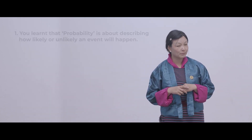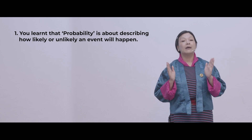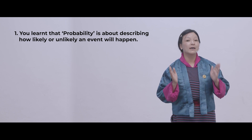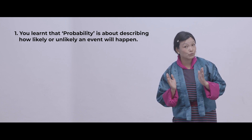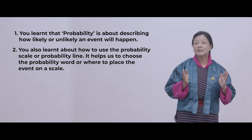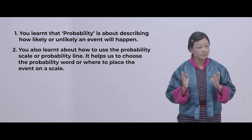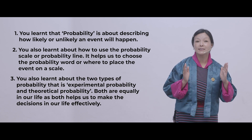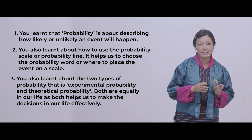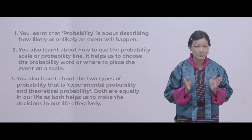Let's recapitulate what you have learned today. In the first part, you learned the concept of probability — about describing or explaining an event that you think is likely or unlikely to occur. Then you learned how to use the probability line or scale using probability terms. Then you learned the concept of theoretical probabilities and experimental probabilities, and you also did an experiment.